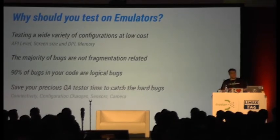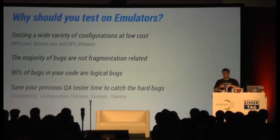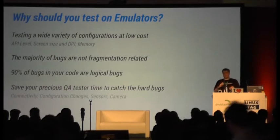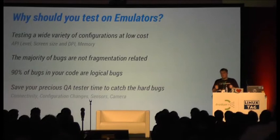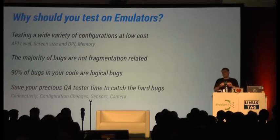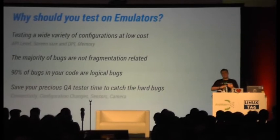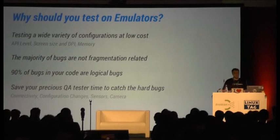We did some research and found that the majority of bugs you encounter in your code are logical bugs, not hardware exceptions — that accounts for around 90% of bugs, and you really should catch those in an automated fashion. Even if you have a test team of software engineers, you want them to catch the hard-to-automate bugs — connectivity issues, or camera apps that depend on a specific driver. Those bugs only account for about 10%, so really take advantage of emulators to catch the logical bugs.